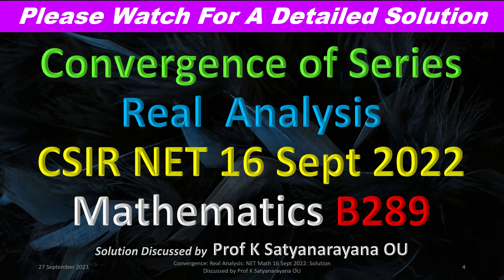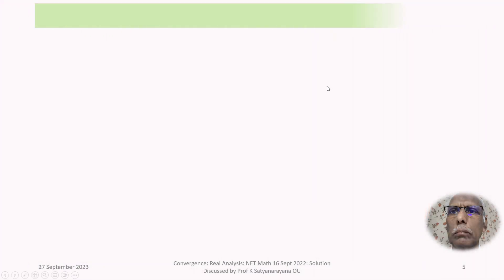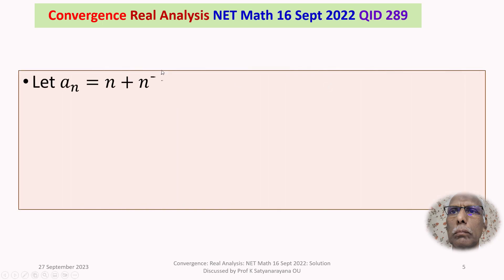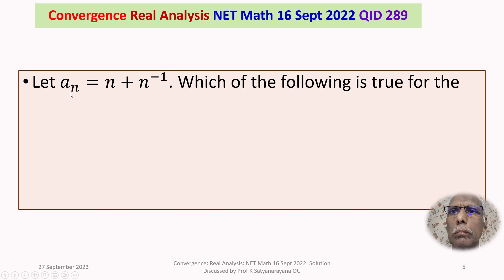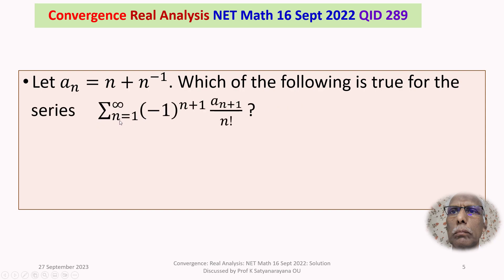We will now discuss the solution of a problem from the section Real Analysis. This question appeared in the CSIR-NET National Eligibility Test held on 16 September 2022, and the problem is related to the convergence of the given series. The given question is: let aₙ = n + n⁻¹. Which of the following is true for the series sigma n=1 to infinity of (-1)^(n+1) * aₙ₊₁ / n factorial?